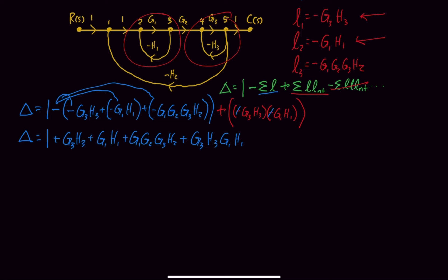So now for Mason's rule, we also have delta K's. And delta K is basically calculated the same way our delta is, but we only do loops that are not touching our forward path. So for us, let's look at delta 1. It's equal to 1 minus. Because all of the loops touch, it's 0, and then at the same time we add the loop pairs that are not touching, but since they are, it's also 0. So delta 1 equals 1.